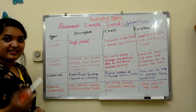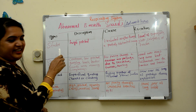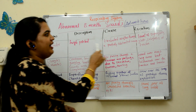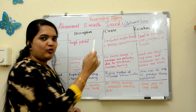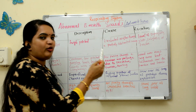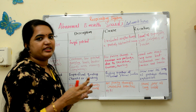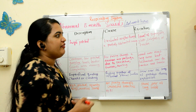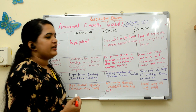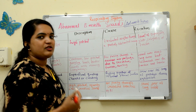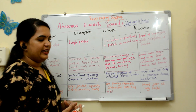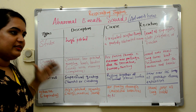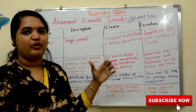The next sound is respiratory stridor — a high-pitched sound caused by turbulent airflow through a partially obstructed airway. The location is at the level of the supraglottis, glottis, subglottis, or trachea. These are the adventitious sounds, and there are also disease conditions associated with each one.